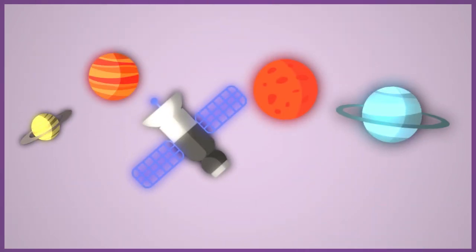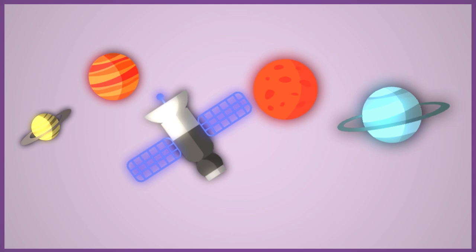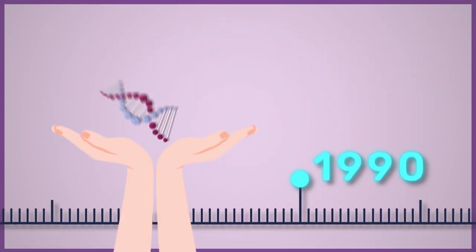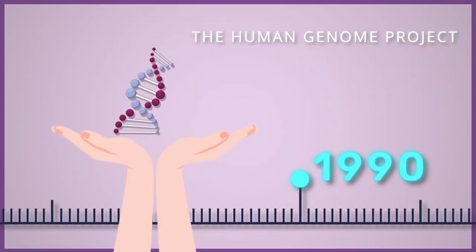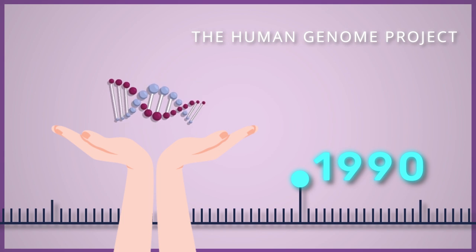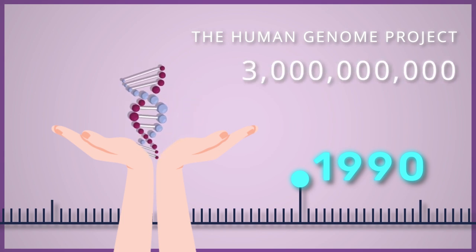1990 saw not only the launch of the Hubble Space Telescope, but also something a bit closer to home, the Human Genome Project. This was a big moment, with a huge collaborative project aiming to sequence all three billion letters of a human genome in just 15 years.